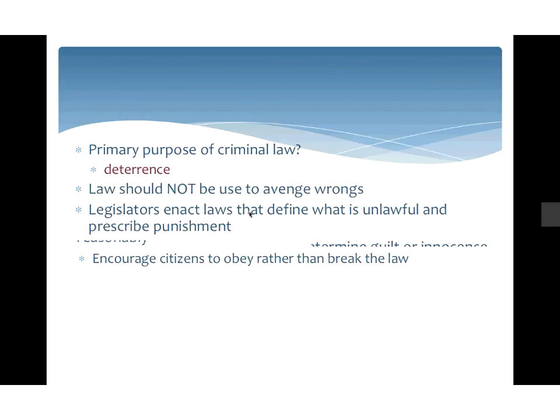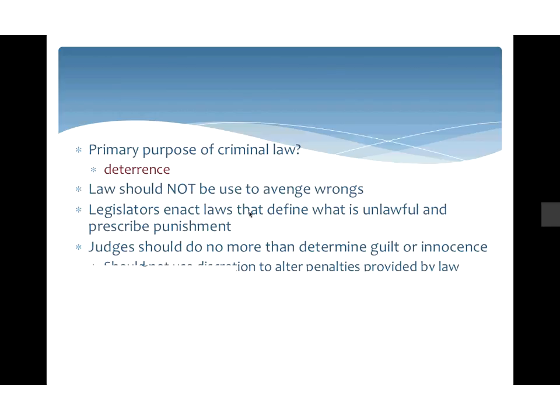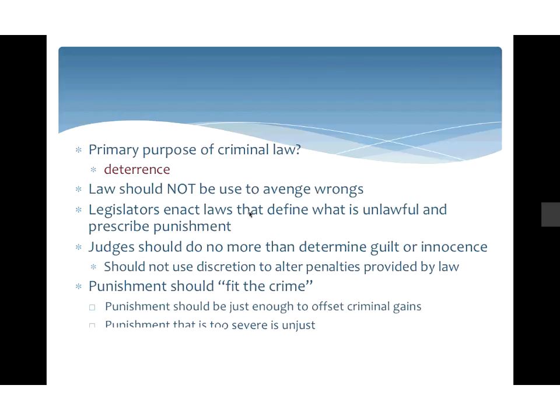What should the primary purpose of the law be? Classical criminologists believe it should be deterrent — we want to deter somebody from breaking the law. Generally we do this through punishment. If people know a punishment exists and don't want to receive it, they will not commit that offense. That's general deterrence. Specific deterrence is if you've done something wrong, been punished for it, didn't like the punishment — you won't do that again.